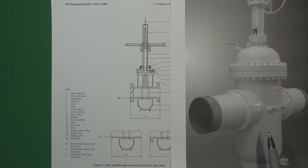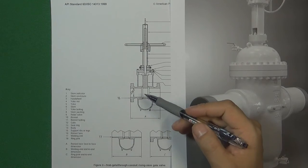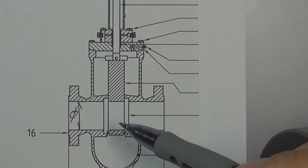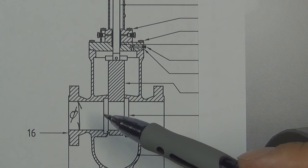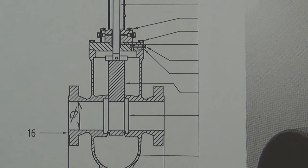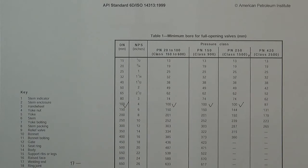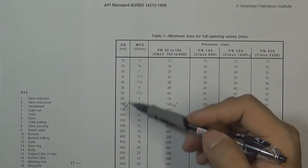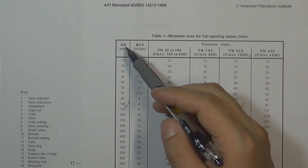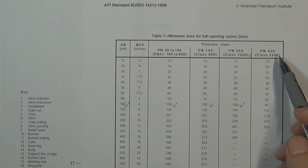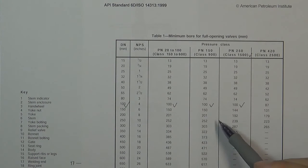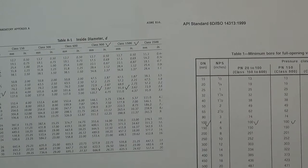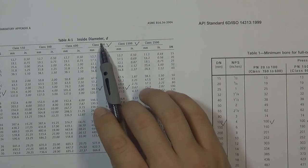When we design this kind of slab gate valve, the first dimension we determine is the valve inside diameter. The valve inside diameter is very important because that is the first size we draw on the valve blueprint. In API 6D, there is a table called minimum bore for full open valves. In this table, the vertical side is divided by different nominal diameters and the horizontal side by different pressure classes, making it easy to find the required inside diameter.